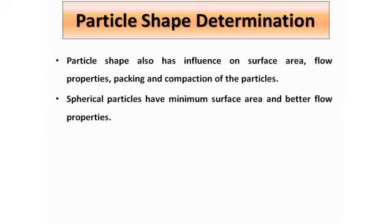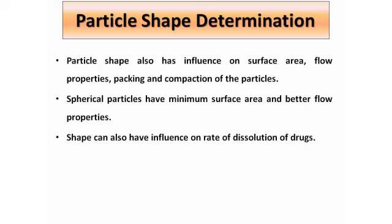The particle shape influences the surface area, the flow property, as well as the packing and compaction of the particle. If the particle shape is spherical the flow will be fast, whereas if the particle shape is irregular the flow will be slow because the edges will hinder the motion of the powder. Spherical particles have the minimum surface area and thus better flow properties.